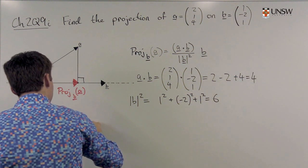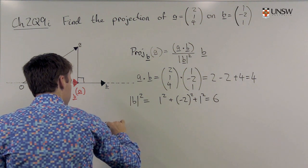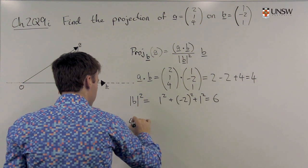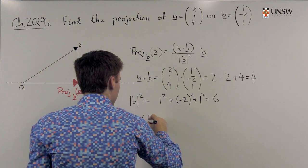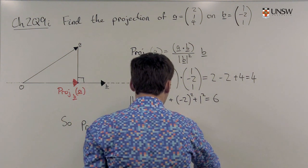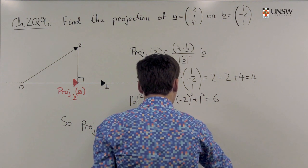So the projection onto b of a equals 4/6 times the vector (1, -2, 1), which equals (2/3, -4/3, 2/3).